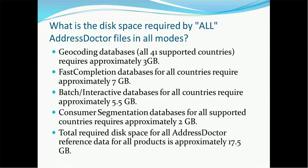This 17.5 GB is not constant. Every year the underlying Address Doctor files change — in fact, some countries update their data every month. The frequency can be monthly, quarterly, or yearly. For every update cycle the data changes, and correspondingly the Address Doctor files also get updated, so the file size may vary over time. Right now assume it is 17.5 GB, but over time it may reach 20 GB or more. This gives you a rough idea for determining the disk space for your environment.